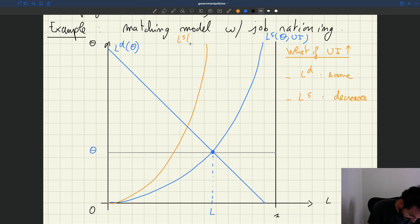Okay, that's our labor supply curve with a new UI that we can put UI prime. Okay, so the labor supply has shifted inside.